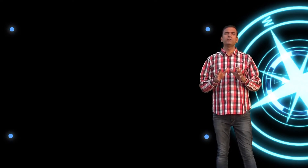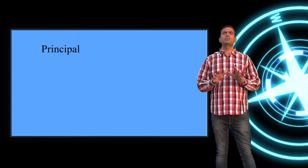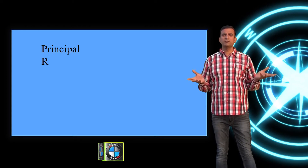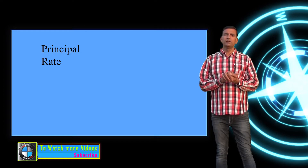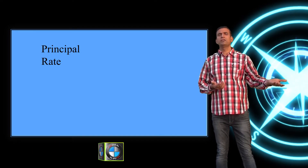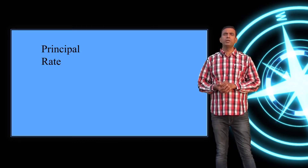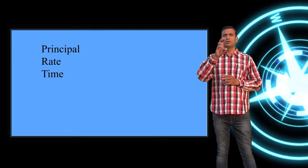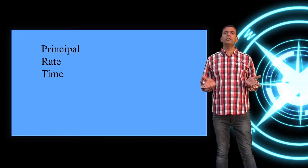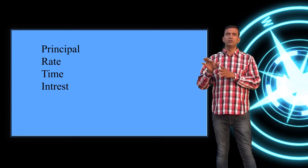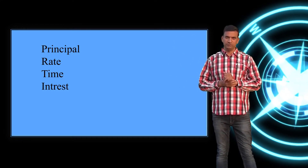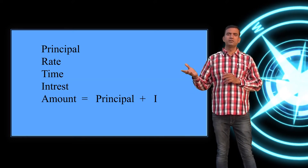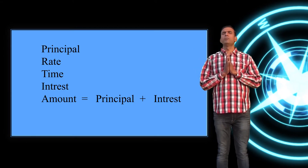First, let us recall all the terms used in compound interest. The first one is the principal — the amount invested by somebody. The second is the rate, which is the most important one, used to calculate the interest. Third is the time duration, which may be two, three, five, or seven years, always calculated in years. Fourth is the interest — what you get from the principal. And finally, the amount, which is principal plus interest.